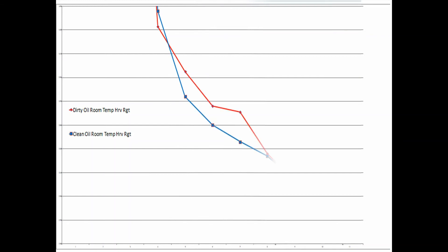It kind of goes all over the place. It's not a nice clean line like my micron gauge shows. But still, there's a little bit of a friction delay here. But still, the clean oil pulled 23 more millitor than the dirty oil pulled.